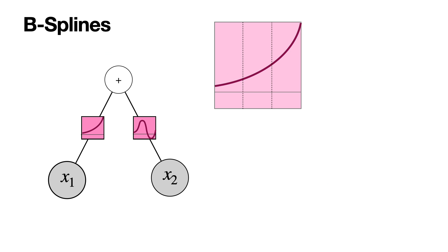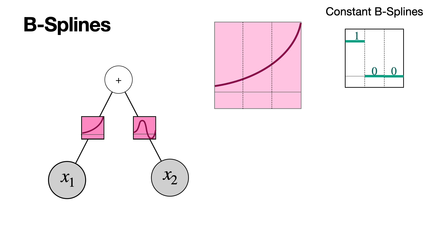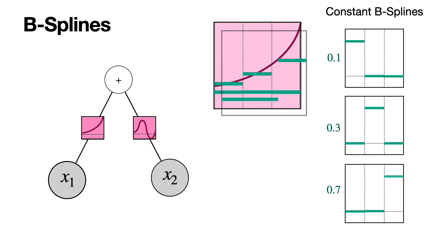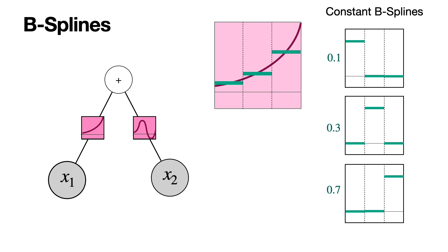B-splines are small functions we can add to approximate a function in a more formal way. The simplest type are constant B-splines. If I cut the interval into three pieces, the splines are: one that equals 1 in the first interval and 0 elsewhere, one that equals 1 in the middle interval and 0 elsewhere, and one that equals 1 in the last interval and 0 elsewhere — these are the basis functions. To approximate a function, I find a linear combination: multiply the first by 0.1, the second by 0.3, the third by 0.7. When I add them, I get the approximation. These three numbers — 0.1, 0.3, 0.7 — form the knot vector.